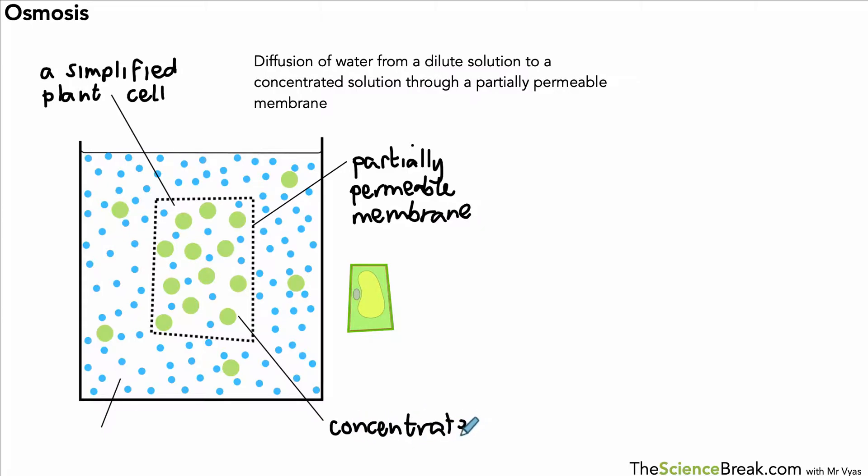Inside the cell we've got a concentrated solution in comparison to the outside, and you could tell that because of the green solute particles compared to the blue water particles inside the cell. On the outside we have a dilute solution, much more dilute, a lot less solute molecules in that solution. We know that water moves from a dilute to a concentrated solution in osmosis.